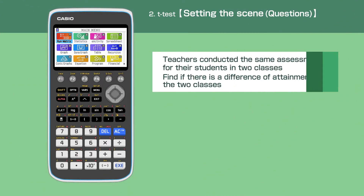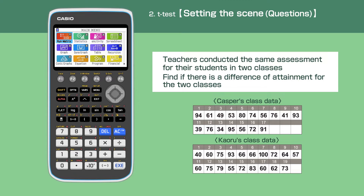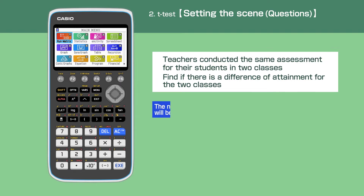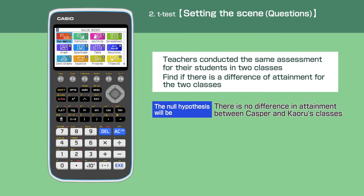Casper and Kaoru are math teachers, and they conducted the same assessment for their students. The assessment results are shown as follows. The teachers want to know if the students in Casper's class performed better than Kaoru's class. The null hypothesis for this question will be: there's no difference in attainment between Casper and Kaoru's classes.